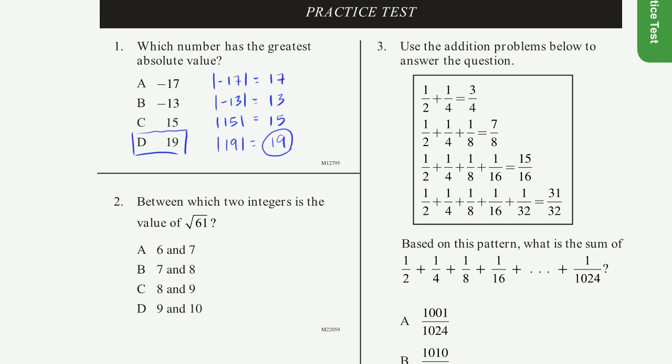But problem number two, maybe I'll do this in gray. Between which two integers is the value of the square root of 61? So the way you think about this is that there's some number that, the square root of 61 is going to be some decimal number. I don't know what it is. But there's going to be some square, or some number that if I square it, is going to be a little bit lower than 61. And then some other integer, if I square it, should be a little bit greater than 61. So let's see if we can figure this out.